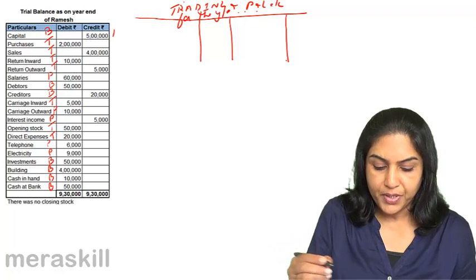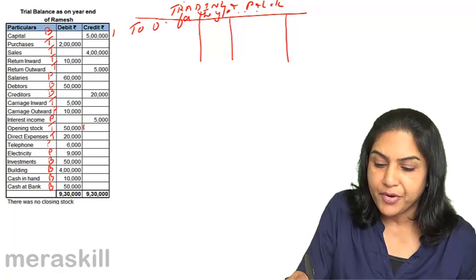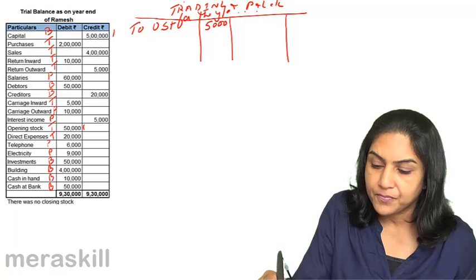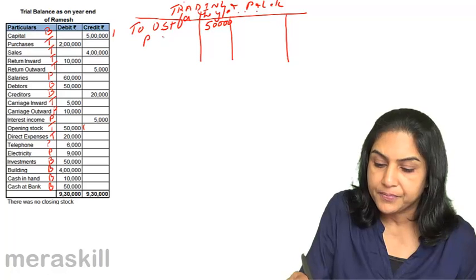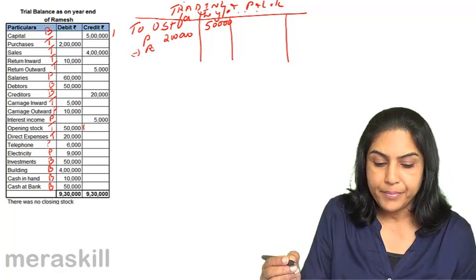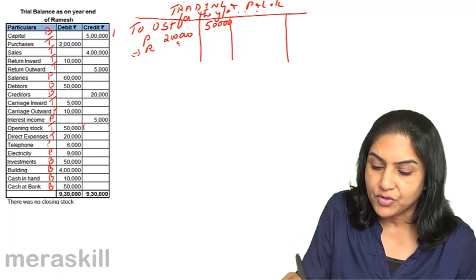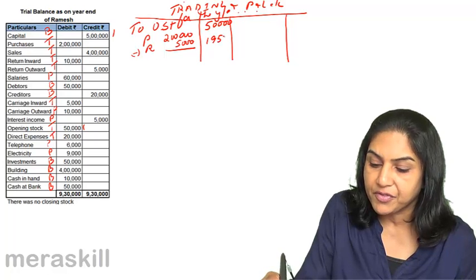We will start with opening stock since it is there — 50,000. To opening stock: 50,000. Purchases are 2,00,000. Less returns outward — that is 5,000. So purchases less return outward gives us 1,95,000.